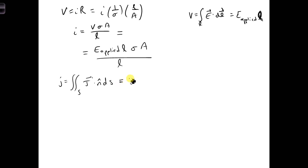So we're going to approximate this as J is equal to A. So putting all this together, we have J A is equal to E applied L, sigma A over L. And we can simplify by getting rid of the L's. We can also get rid of the A's.